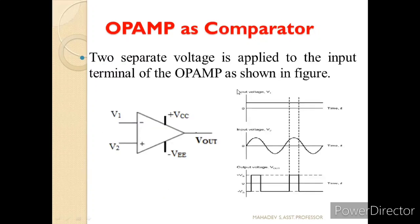Now let us see the op-amp as a comparator. Two separate voltages are applied to the input terminals without any feedback. V1 is a unit step function and V2 is a sine wave. Comparing at each respective position, we get the output as a pulse. By comparing at each and every stage, we get the respective output of the comparator.